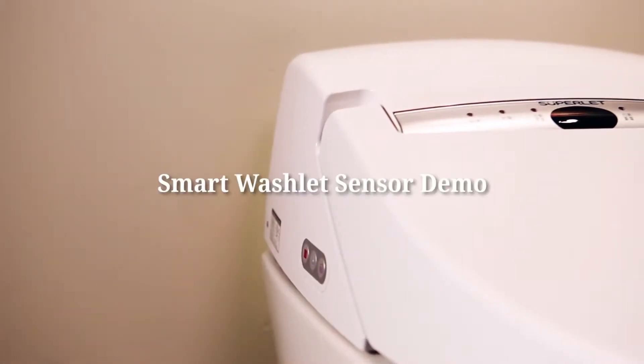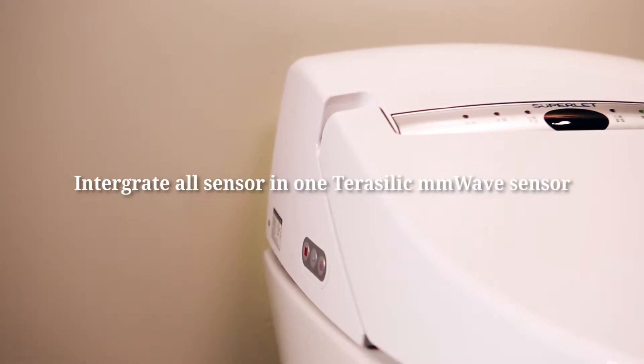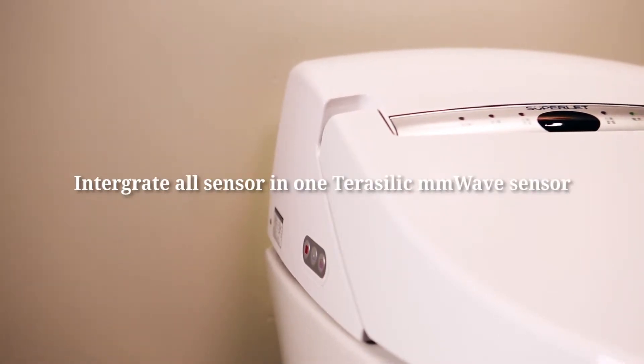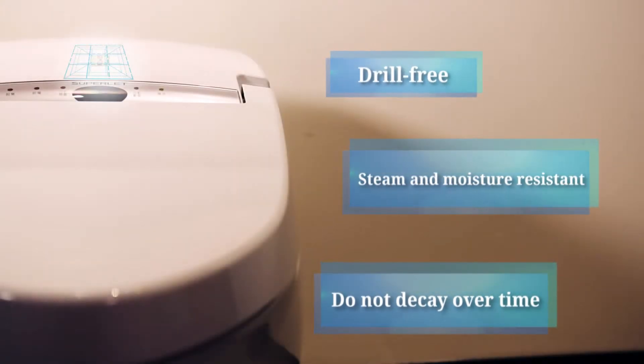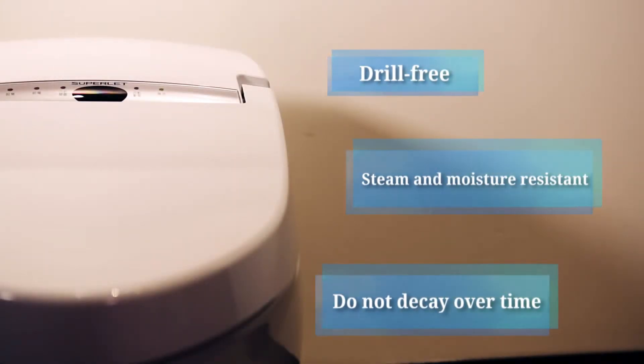Multiple detection modes reduce the number of sensors on the washlet. Terasilic's MMWave sensor detection behind the washlet casing gives the product a clean look. MMWave sensor won't be affected by steam and moisture, and won't have any IR sensors light decay problems either.